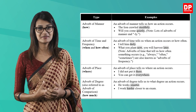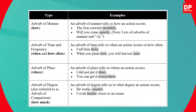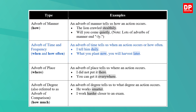Let's look at some types of adverbs. When an adverb modifies a verb, it can often be categorized as follows. Adverb of manner — how: an adverb of manner tells us how an action occurs. For example: 'The lion crawled steadily.' 'Will you come quietly down the stairs?' Adverbs of time and frequency — when and how often: 'I tell him daily.' 'What you plant now you will harvest later.' Adverbs of time that tell how often are also known as adverbs of frequency. Adverb of place — where: 'I did not put it there.' 'You can get it everywhere.'